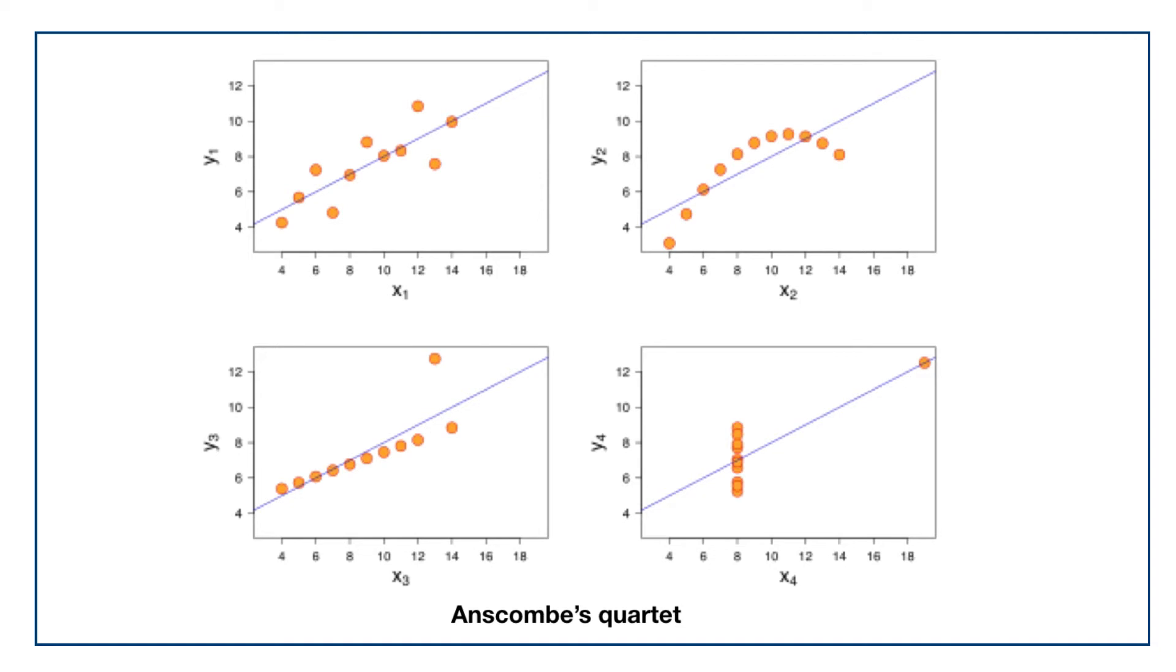This is Anscombe's famous quartet. You can find the graph on Wikipedia. All these four data sets have the same chi-squared means, best fit lines, and uncertainties in the fitting parameters. But they're obviously very different data. In the right-hand two cases, probably fitting a straight line is just the wrong thing to do. The bottom left, if you remove the flyer data point, the gradient is different and the intercept. It's only the top left where the fit's actually doing the right thing altogether.